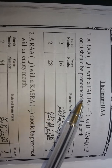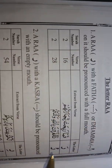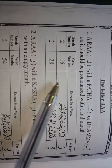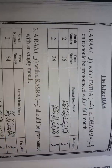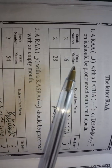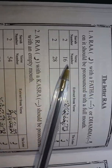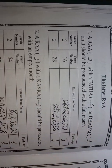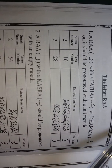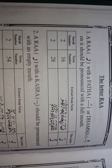The letter Ra is number one. Actually, there are four explanations about the letter Ra. But today, in this video, we will learn only four points, and in the next video we will learn the other ones. So if you like this video, please subscribe and share with your friends — maybe your friend will learn as well.